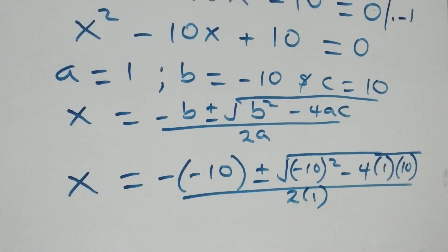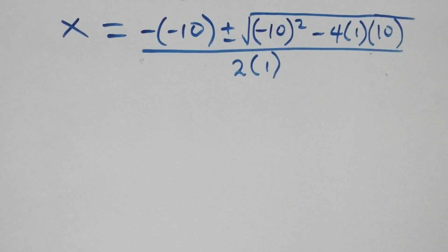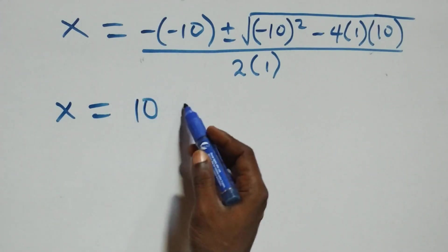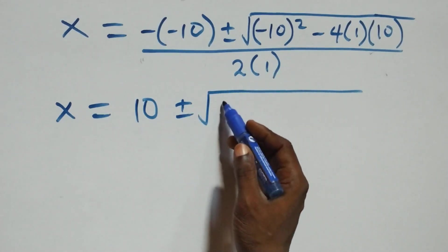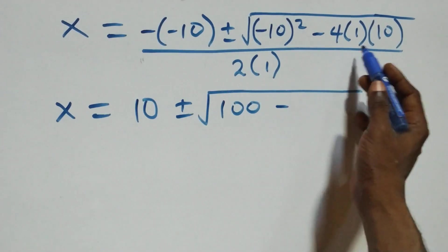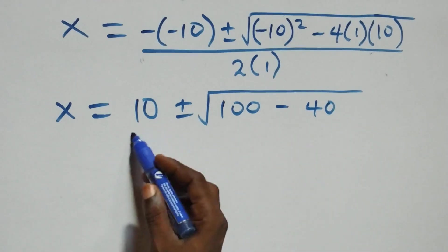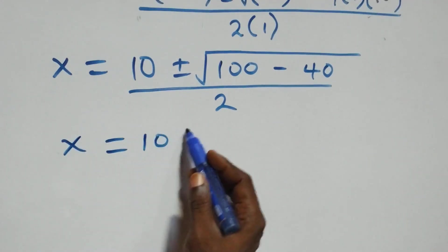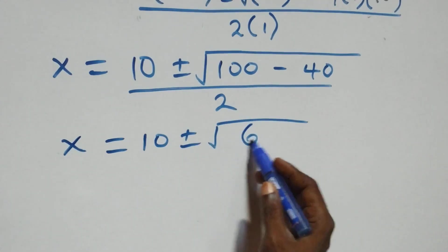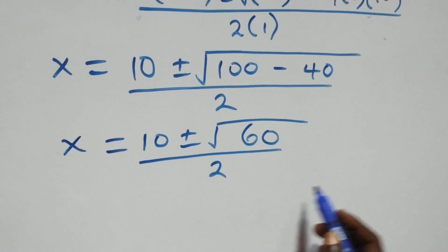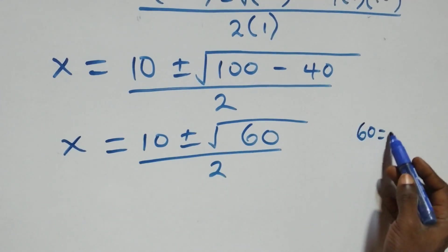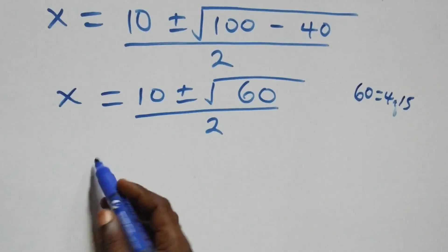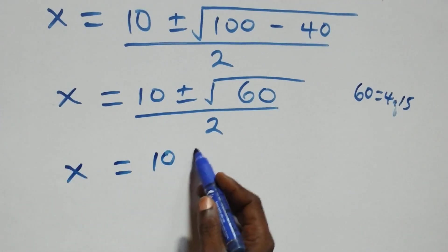All over two a, which implies x equals to ten plus or minus square root of one hundred minus four times one times ten, that's forty, all over two. Which implies x equals to ten plus or minus square root of sixty, and we can write square root of sixty as square root of four times fifteen, all over two.